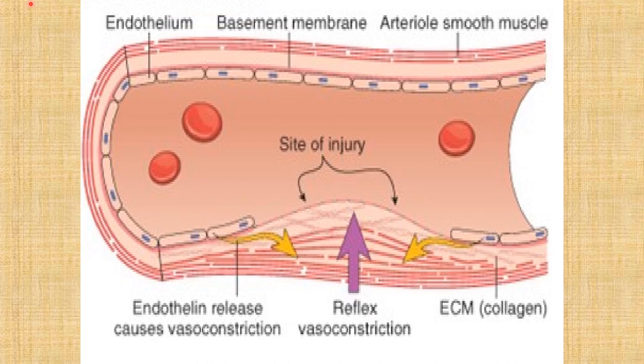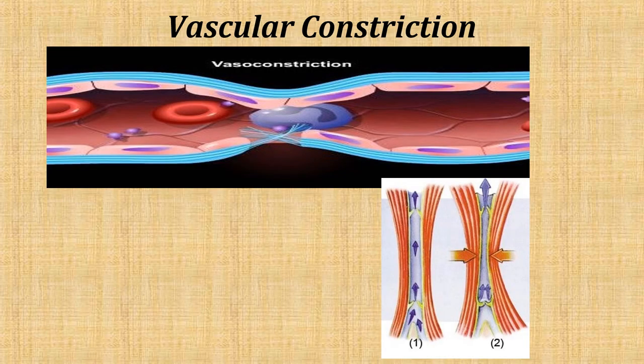The immediate response of the blood vessel to injury is vasoconstriction, due to contraction of vascular smooth muscle. It instantaneously decreases blood loss and helps in platelet plug formation. The contraction is initially a mechanical response (stretch-induced contraction) but is maintained and potentiated by secretion of vasoconstrictor substances like serotonin from activated platelets. The normal blood vessel is constricted at the site of injury.